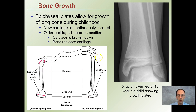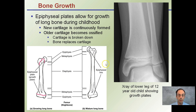The mature long bone, in comparison to that growing long bone, shows the diaphysis reaching its full length. The other regions maintain very similar shapes, maybe increasing in width depending on the age of the individual, but the key part is that the diaphysis is increasing in length.